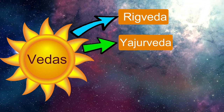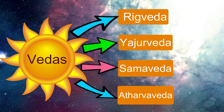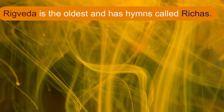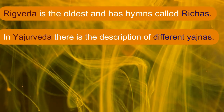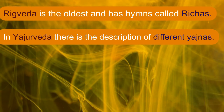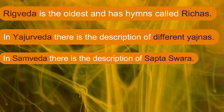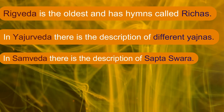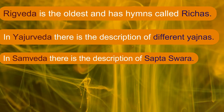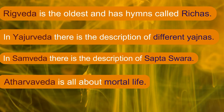The four Vedas are Rig Veda, Yajur Veda, Sam Veda, and Atharva Veda. Rig Veda is the oldest and has hymns called Richas. In Yajur Veda there is a description of different Yajnas. In Sam Veda there is a description of the Saptaswara, that is, the seven musical notes. Atharva Veda is all about mortal life.